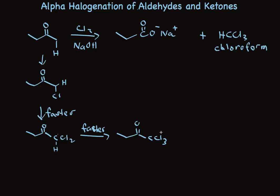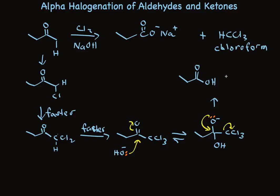Typical for a nucleophilic acyl substitution, once we've added the nucleophile, we lose the leaving group. So we make the carboxylic acid and this anion, which rapidly acquires a proton to form chloroform, while the carboxylate rapidly loses a proton to form the salt. This is the haloform reaction. It's typical only of methyl ketones — other ketones don't put enough halogens on the carbon to make it a good leaving group.